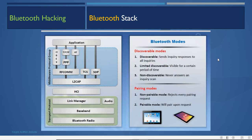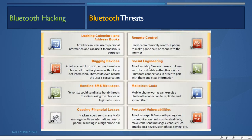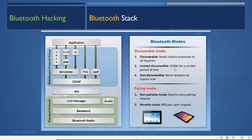The Bluetooth stack includes: radio frequency, baseband, link manager, audio, hardware compatibility, middleware protocol group (L2CAP, RFCOMM, TCS, SDP, OBEX, TCP/IP, PPP), and applications. Bluetooth modes: Discoverable (responds to all inquiries), Limited Discoverable (visible for a certain period), and Non-discoverable (never answers inquiry scan). Pairing modes: Non-pairable (rejects every request) and Pairable (accepts pairing upon request).